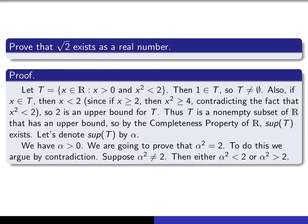It turns out the right set to look at is: let T be the set of real numbers x such that x is positive and x squared is smaller than 2. In order to apply the completeness property, we have to show that T is non-empty. I observe that 1 is an element of this set, because 1 is a real number that is positive and its square is smaller than 2 — since its square is 1. So T is non-empty.